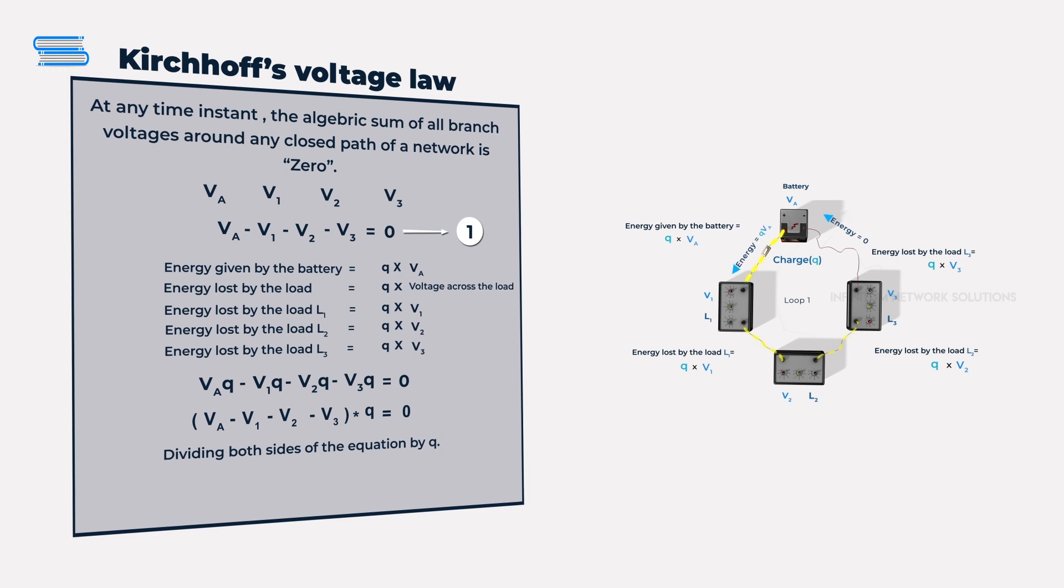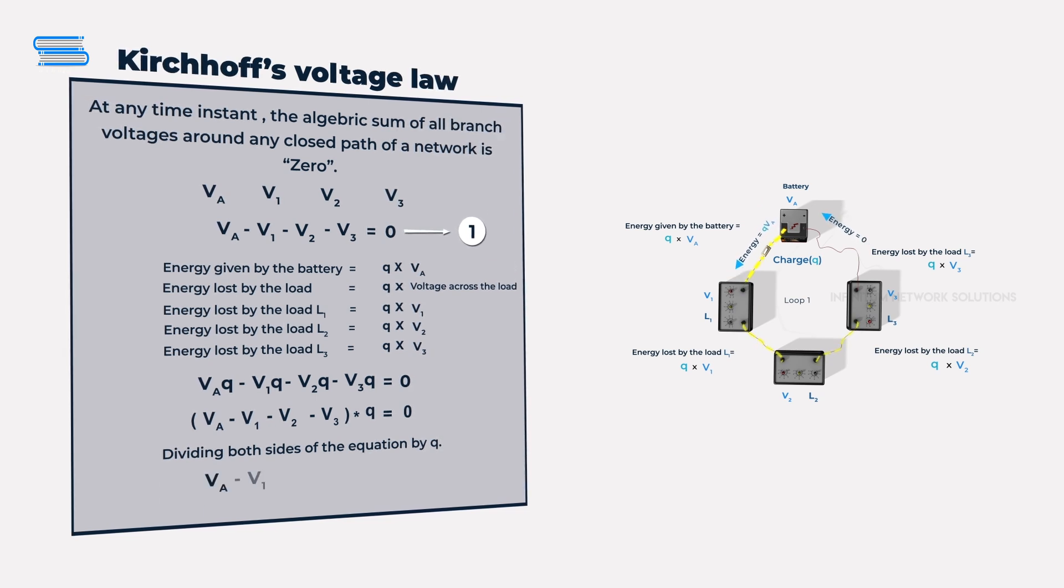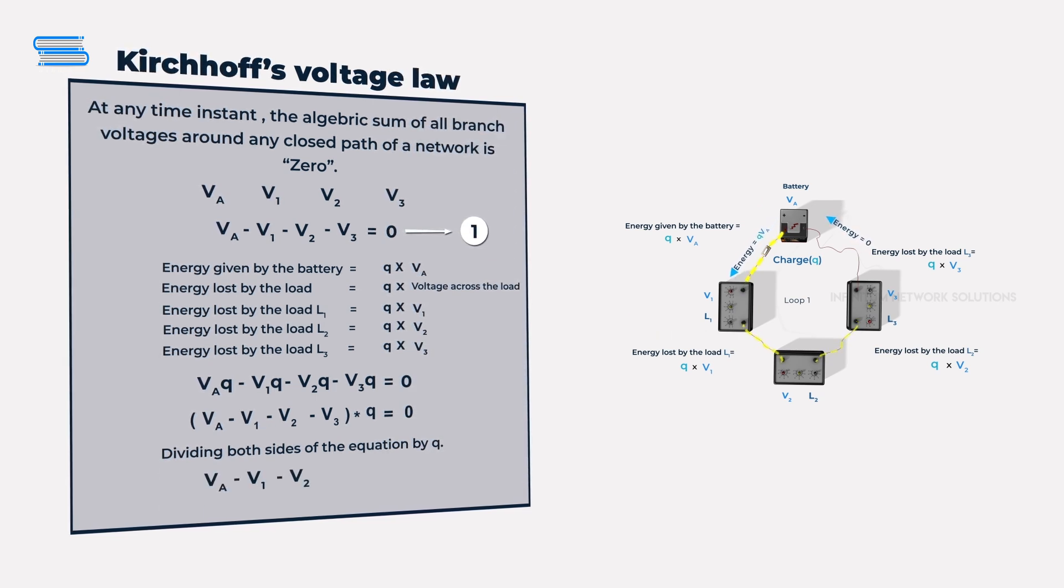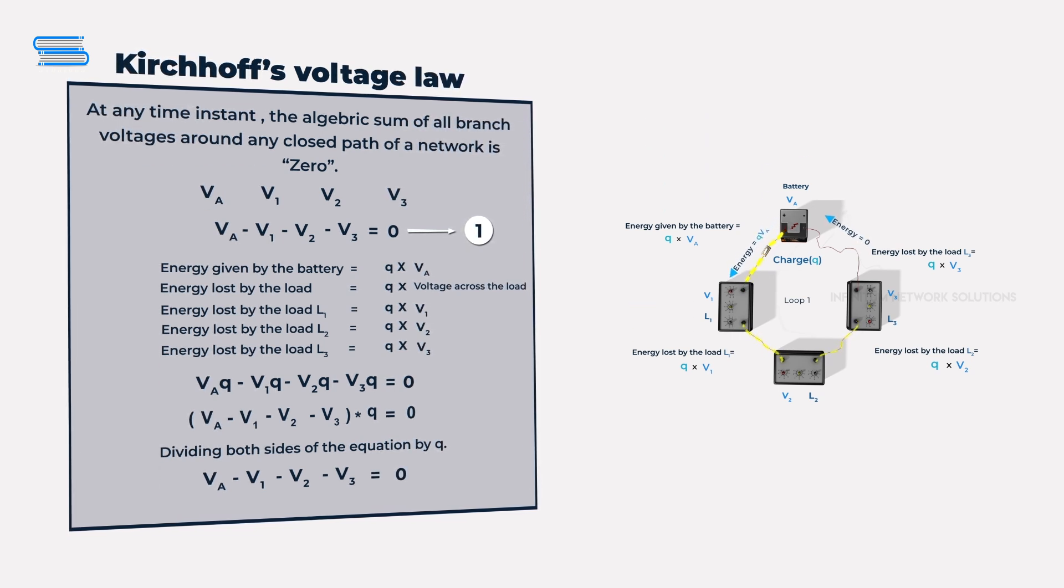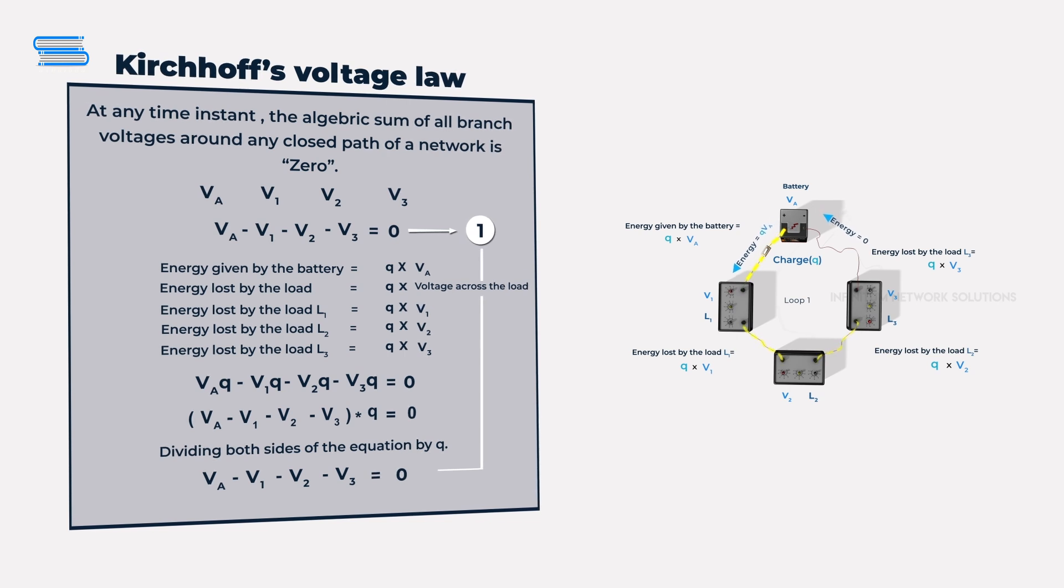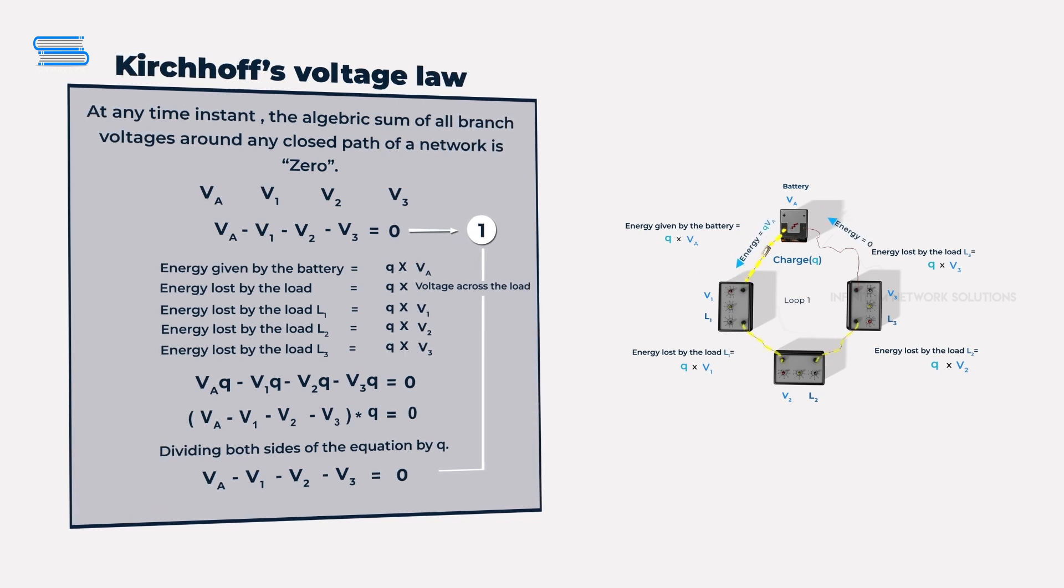By dividing both sides of the equation by Q, we have VA minus V1 minus V2 minus V3 is equal to zero. This is the same equation as equation one, so we've basically proved Kirchhoff's voltage law.